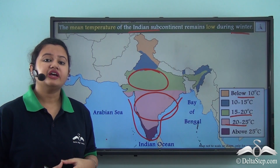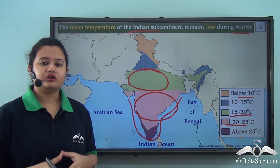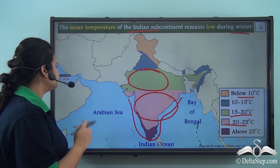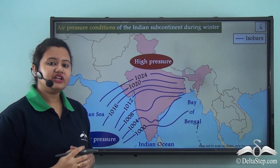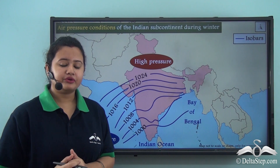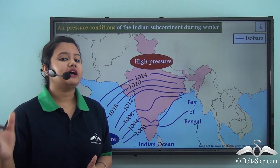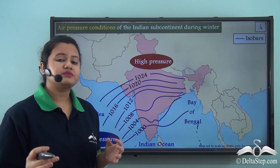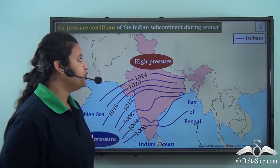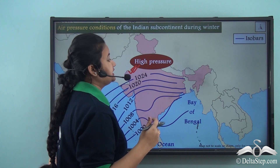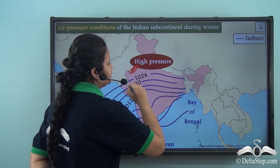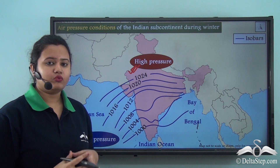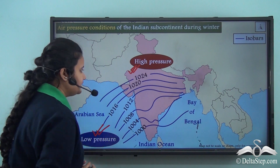During winter the Indian landmass gets cooler, and since high pressure is associated with low temperature, a high pressure zone develops over it, mainly lingering over the northern plains. The adjoining water bodies are comparatively warmer, so a low pressure zone exists there. These are the atmospheric conditions of the Indian subcontinent during winter season.